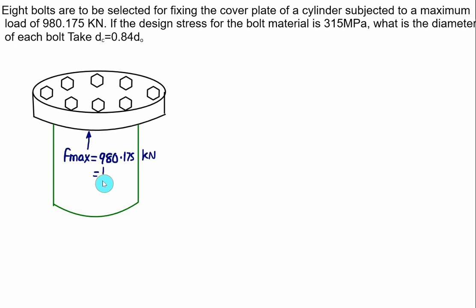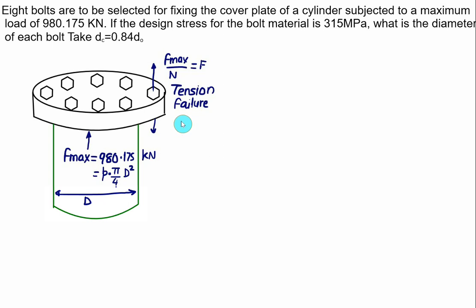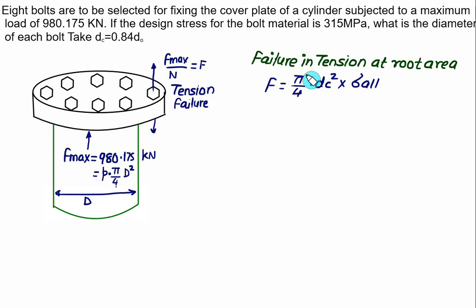The cylinder exerts a pressure force Fmax = 980.175 kN, distributed equally among 8 bolts. Each bolt carries Fmax / 8, putting it in tension. The bolt is weakest at the root area.